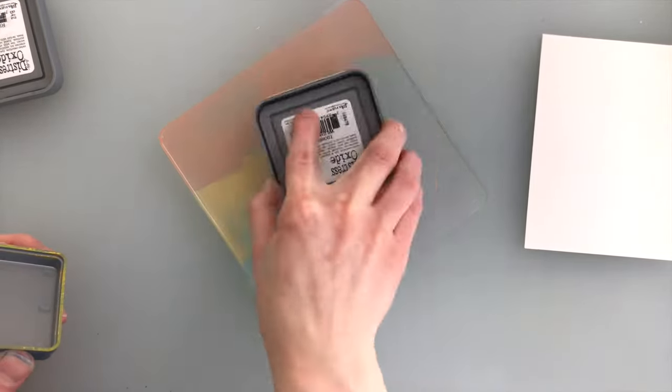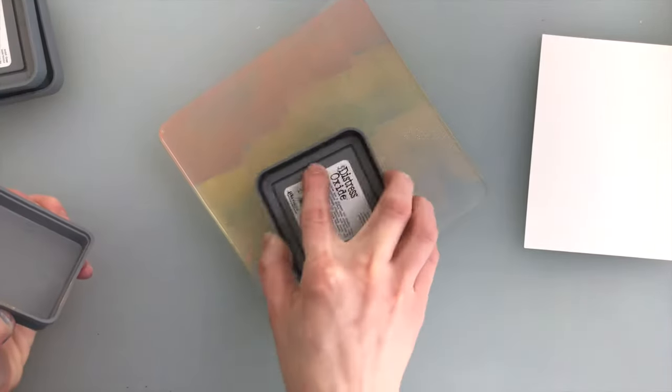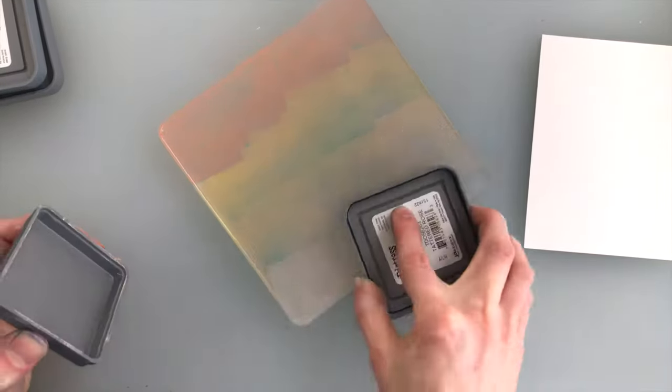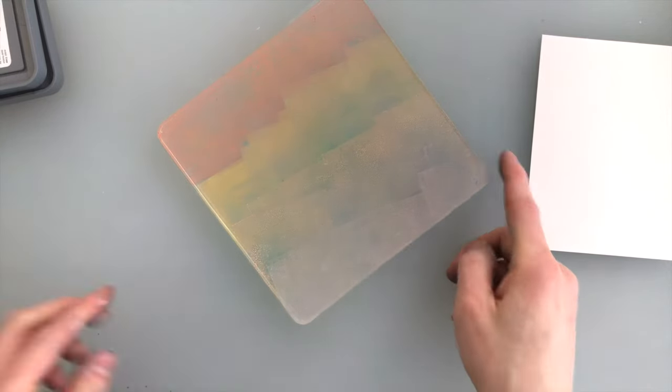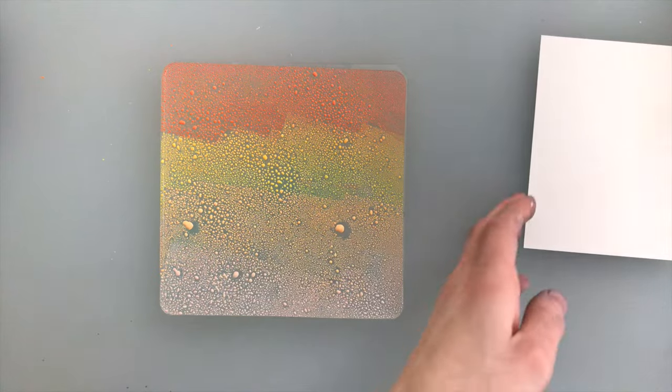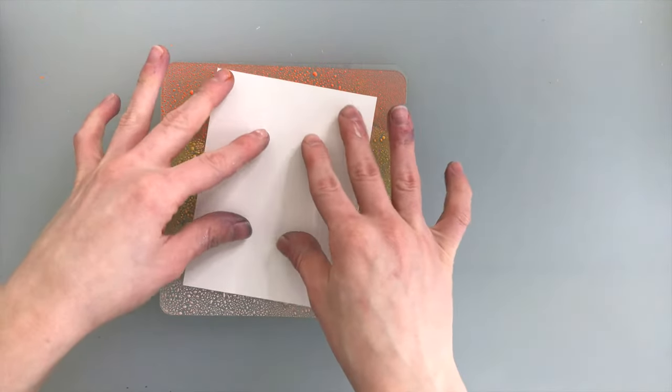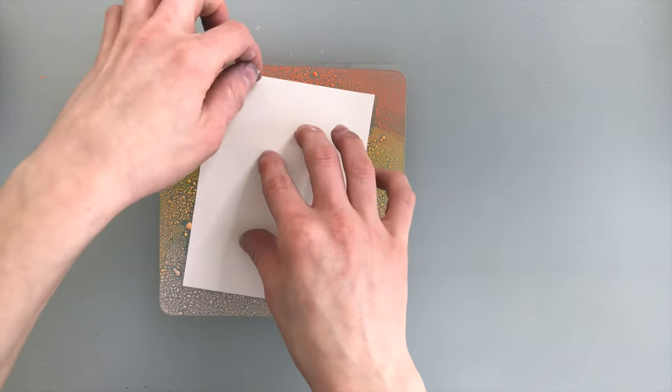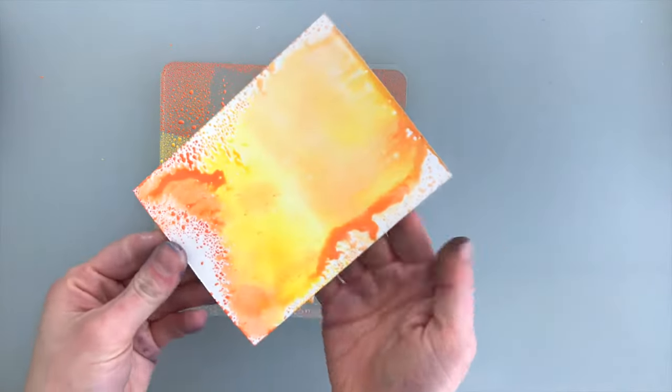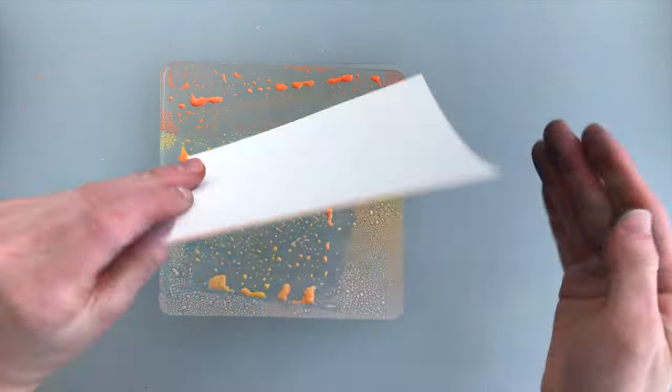These will blend together really well once we add some water. I've got four different colors here to create my background color, and I'll spray it really well until the ink starts to bead up on the surface of the gel press. Once the inks have some water on them, I will take some Strathmore Bristol paper and smush this into that ink.